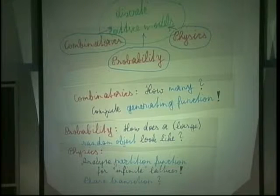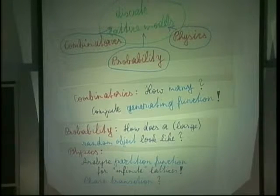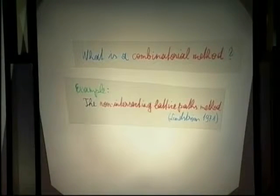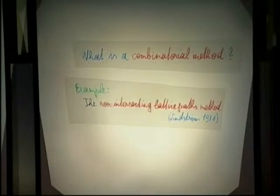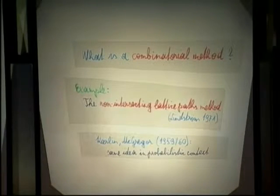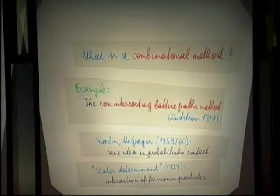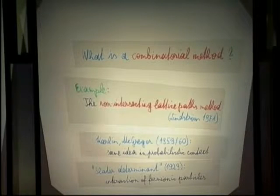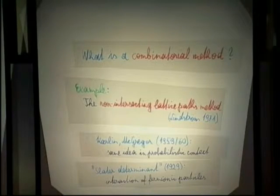What is a combinatorial method? Let us take a typical combinatorial method like the non-intersecting lattice path method, to which I will come back. The first general theorem on this is by Bernd Lindström in 1971. But actually, Karlin and McGregor had the same idea somewhat earlier, in a probabilistic context. And physicists will also know that there is the Slater determinant, which has the same idea sitting inside — although you could not use this particular result to derive the non-intersecting lattice path theorem of Lindström, still it's the same idea.